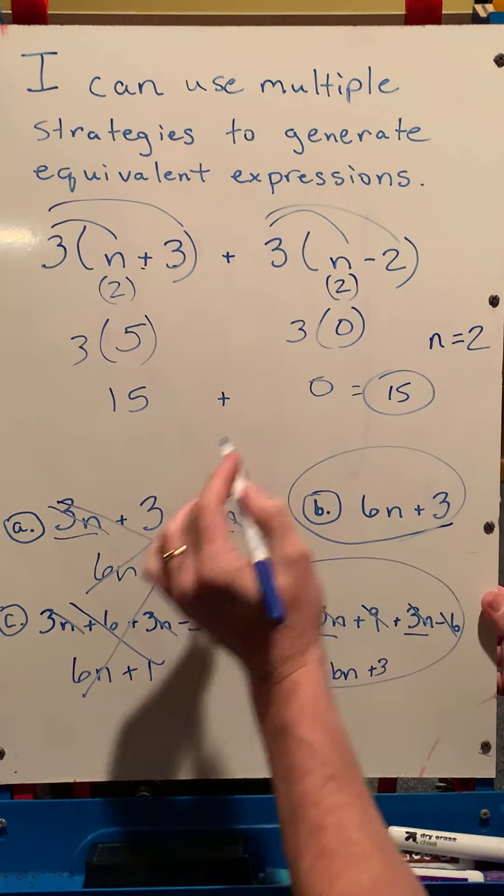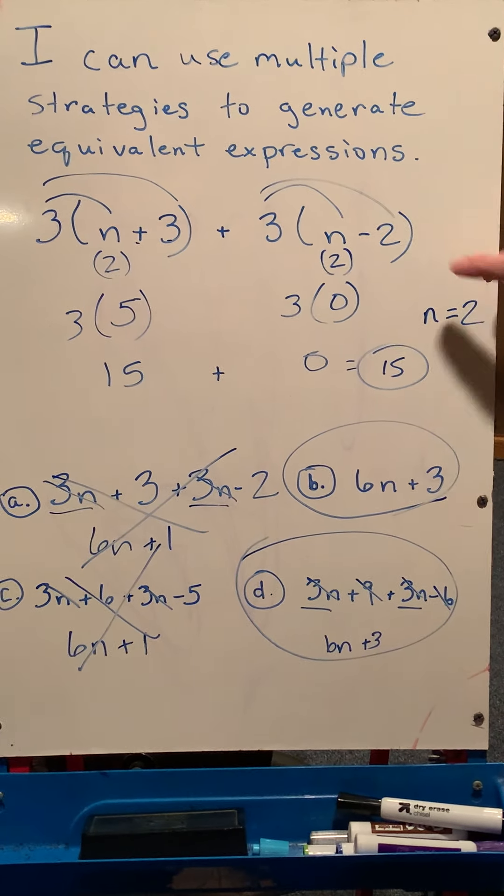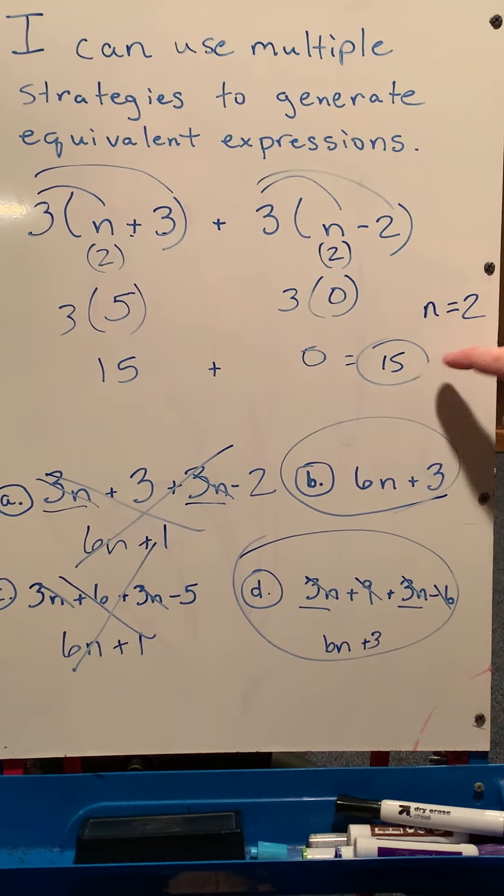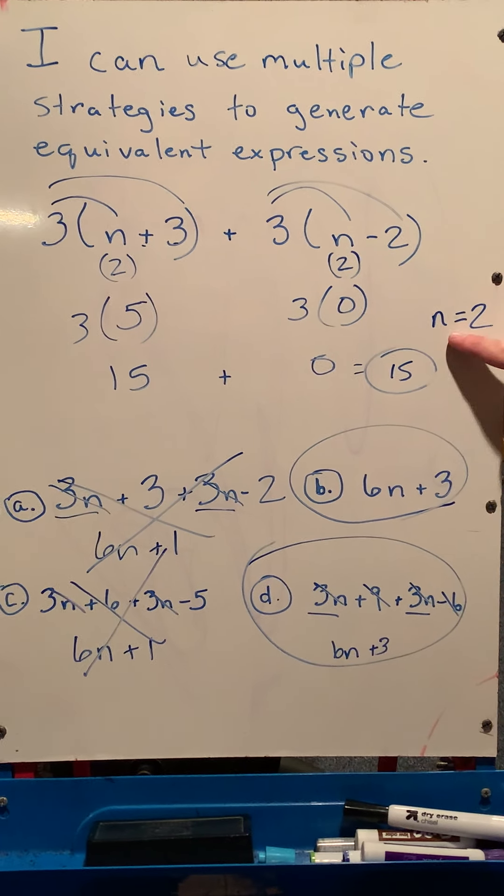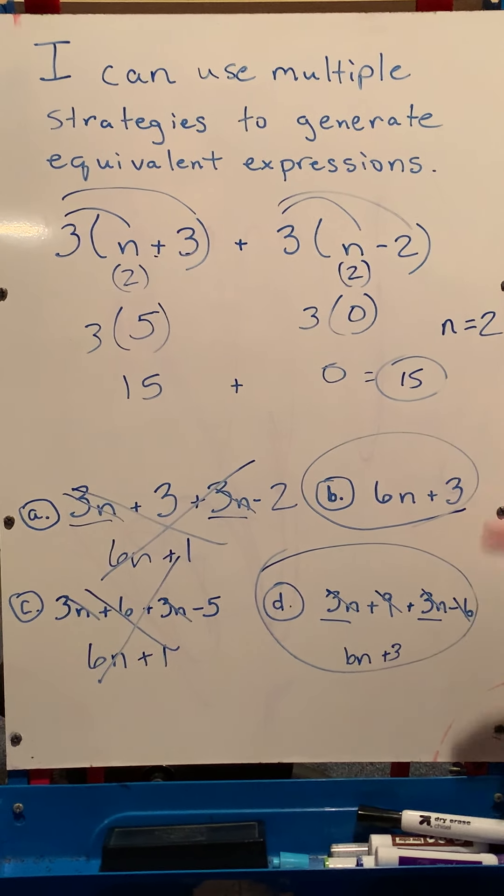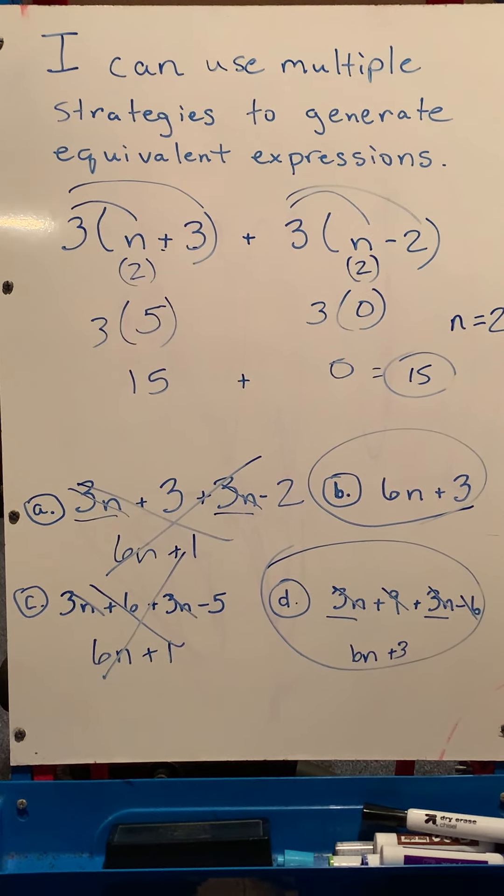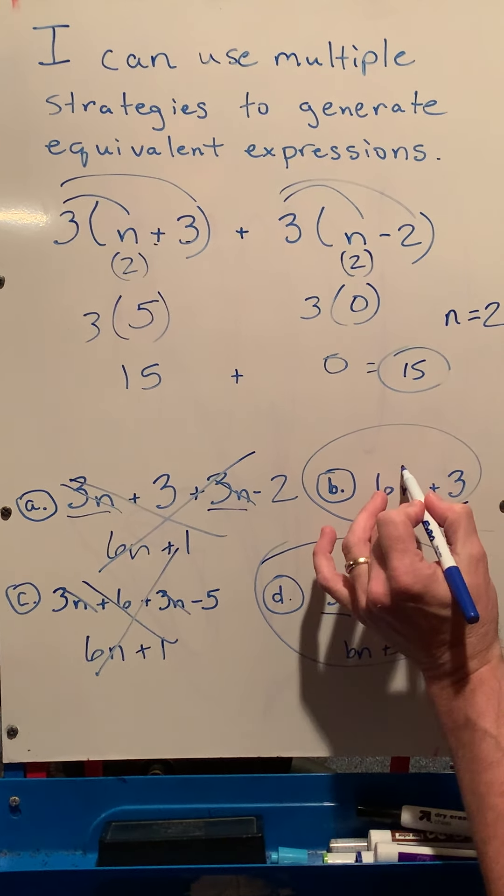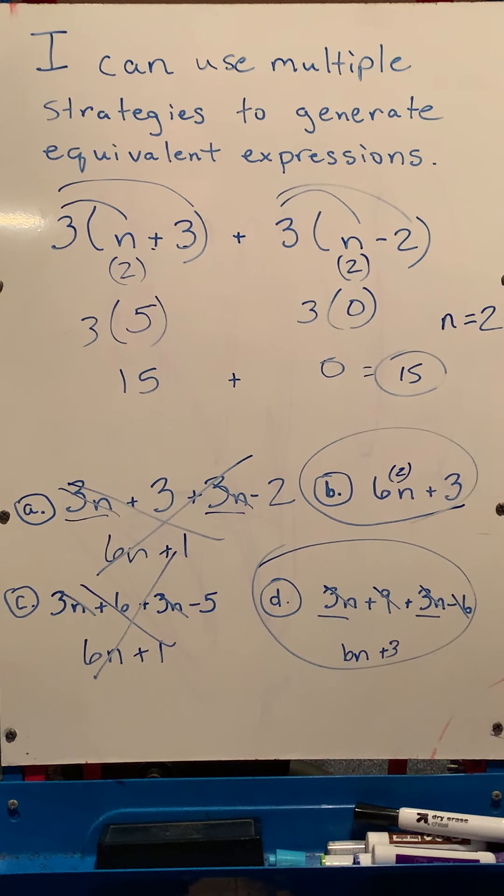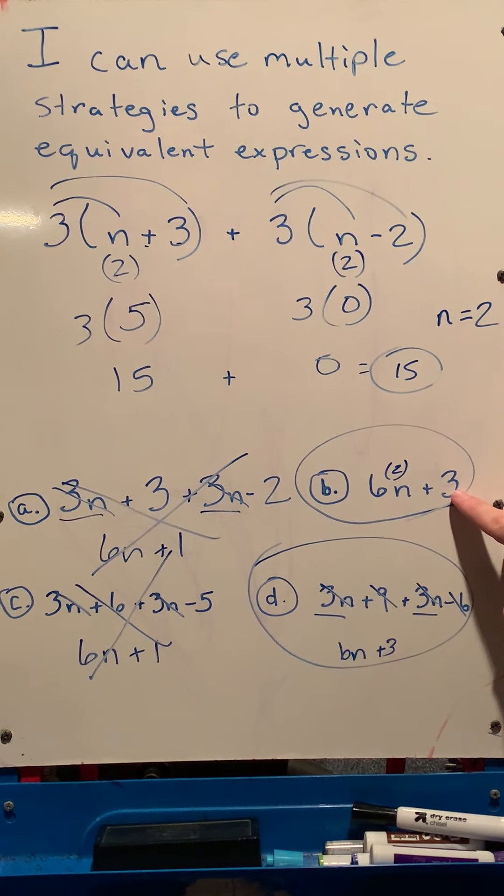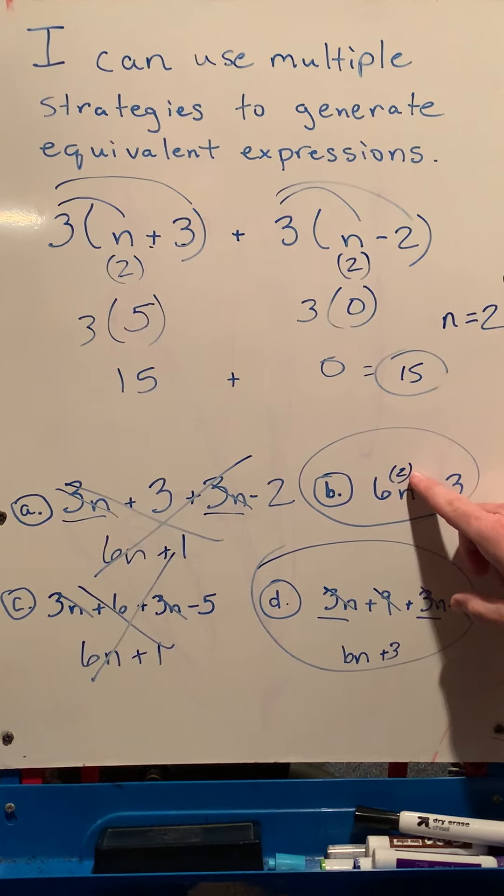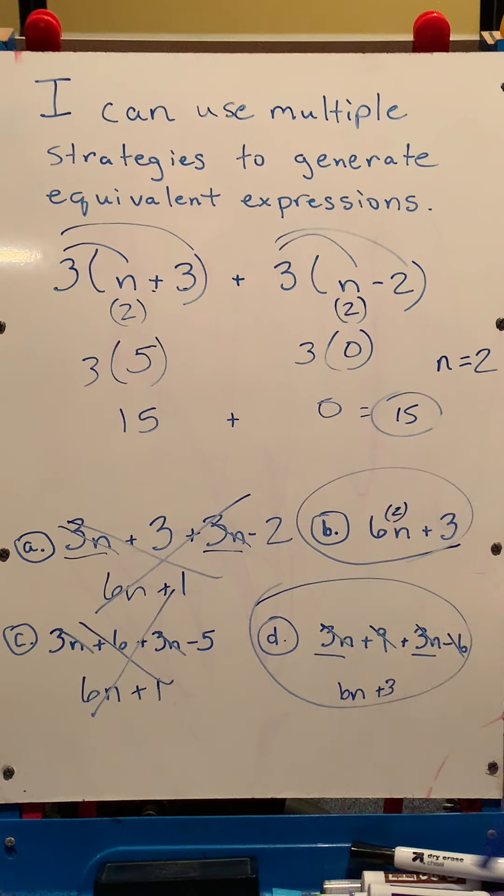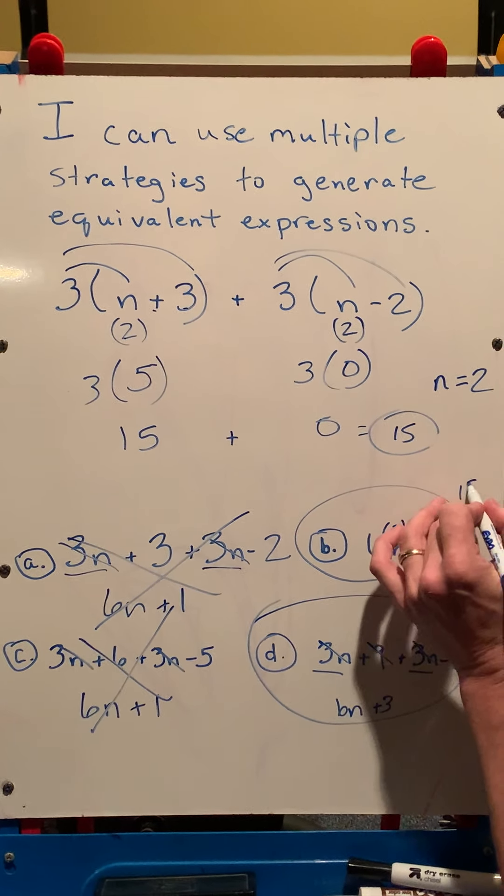So I know when n equals 2, this expression equals 15. So if I go substitute and n is 2 down in here, it should also end up 15, and then I can say that they are equivalent. So if n is 2, plug it in here, and I know I have to multiply before I add. So 6 times 2 is 12. Add 3 is 15. So it does equal 15.